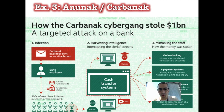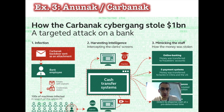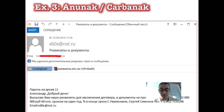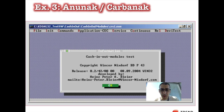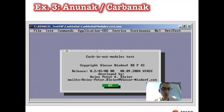The third one is Anunac, also known as Carbanac. Very similar — the bad guys got into the network, crossed into the ATM network, and controlled the machines. Once they controlled the machines, they used a test tool from the vendor — though it was a modified test tool, slightly modified so that it would work, as the original test tool would not have worked by default. Kaspersky Labs and Group-IB both have very detailed papers on the exact workings of this malware and these attacks.